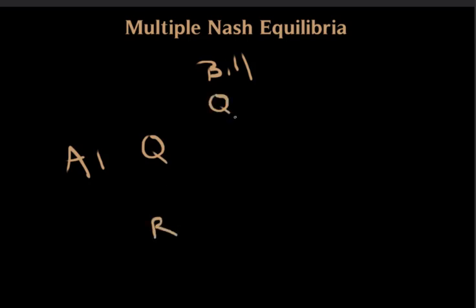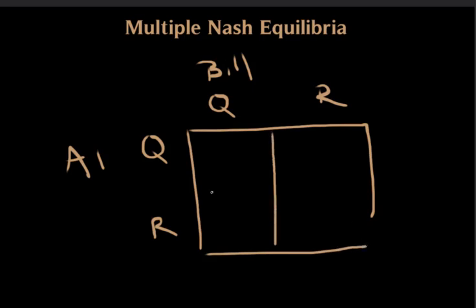So we represent that in a 2x2 matrix like this, just like the prisoner's dilemma. So Q for staying quiet and R for running away. If Al and Bill both stay quiet, they get to stay in the safe house because the zombie won't notice them and they'll walk away. So we're going to represent that with the utility of 3 for Al and 3 for Bill.